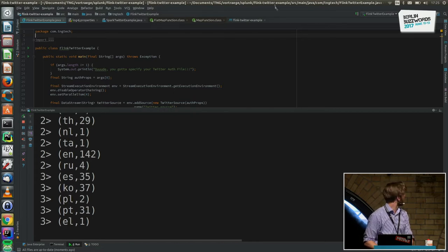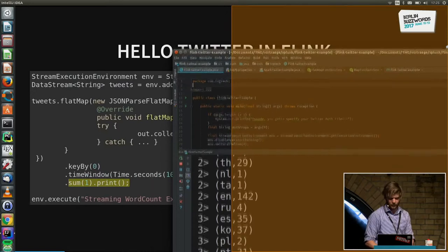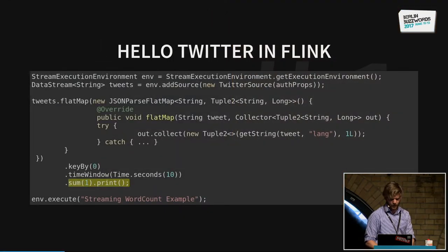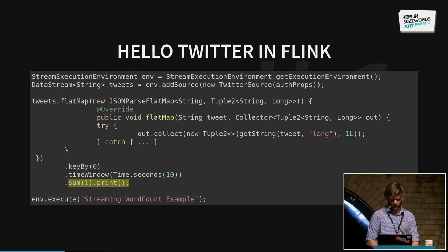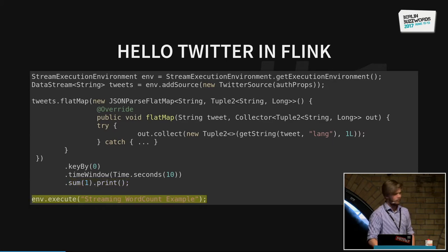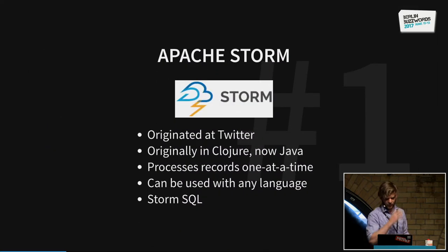So you can see the languages and the counts. The number before that — the one or three — is just which core it's running on. When you run a big data application it's always distributed on multiple machines; now it's just cores on my laptop. That's how a Flink application looks.